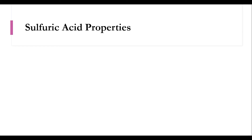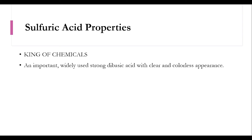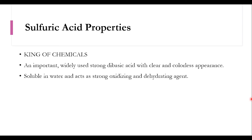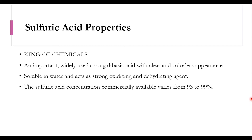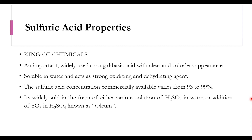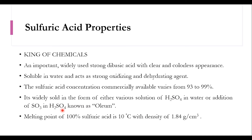First we will look at the properties of sulfuric acid. It is called the king of chemicals, and the economy of any country is dependent on its production. It is an important, widely used strong dibasic acid with a clear and colorless appearance, soluble in water, and acts as a strong oxidizing and dehydrating agent. Its concentration commercially ranges from 93 to 99%. It is widely sold as solutions in water or as oleum (H2S2O7), which is SO3 added to H2SO4. The melting point of 100% pure sulfuric acid is 10°C with a density of 1.84 g/cm³.